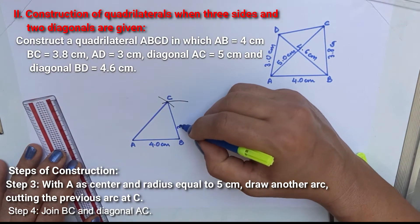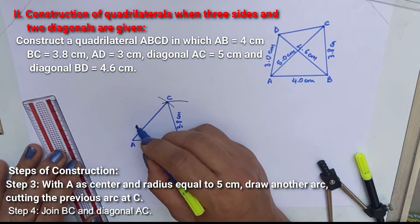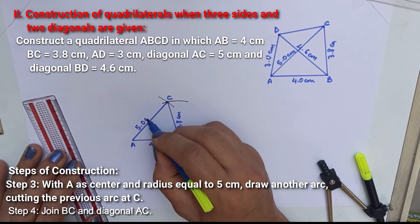Write the measurements: BC equal to 3.8 cm, AC equal to 5 cm.